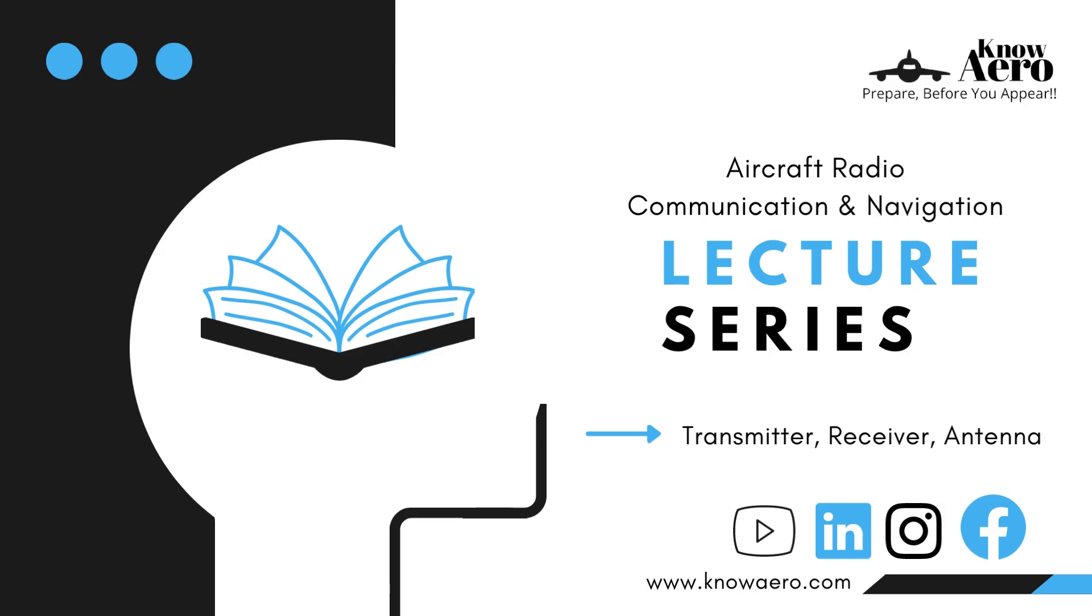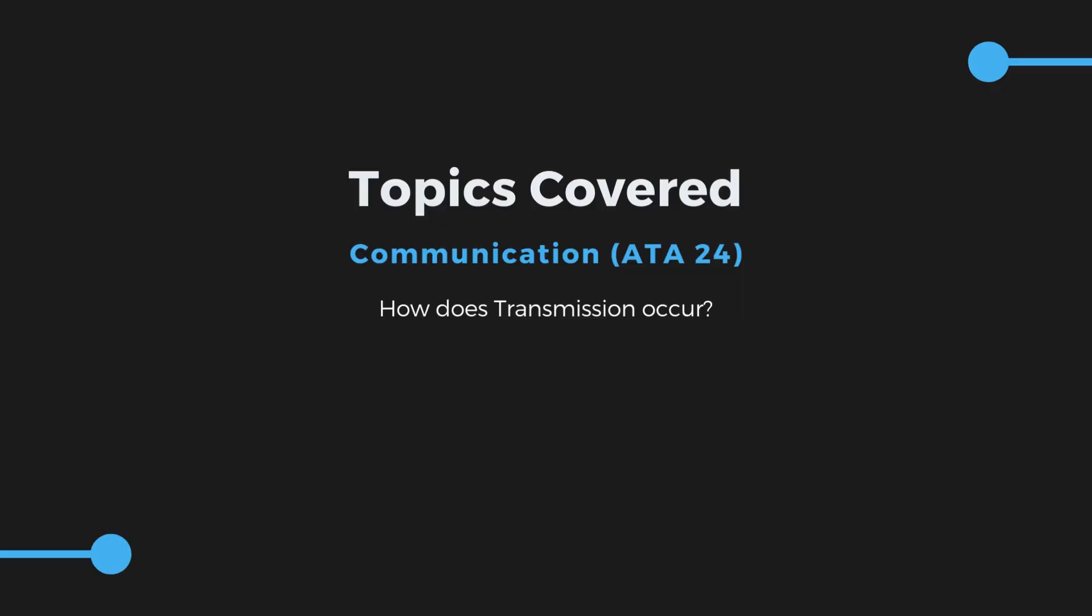So in this lecture we will learn about the transmitters, receivers and antennas which make the propagation possible. We will learn how transmission occurs, what are the components of the transmitter, how the receiver receives the signal and the components of the receiver, and finally I shall conclude this lecture with the antenna and its type. So let us get started.